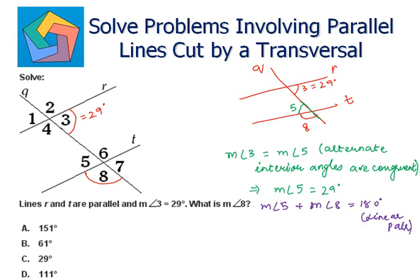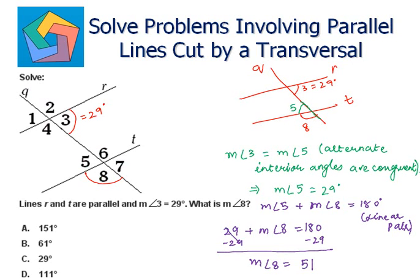So 29 plus the measure of angle 8 is equal to 180. Subtracting 29 from both sides, the measure of angle 8 is equal to 180 minus 29, which is 151 degrees, which is the answer in part A.